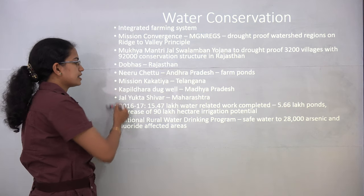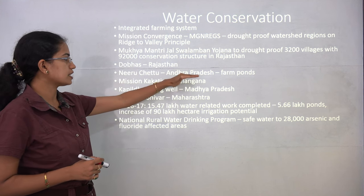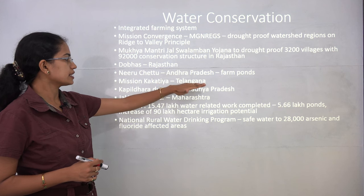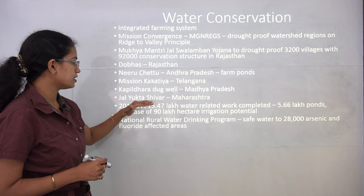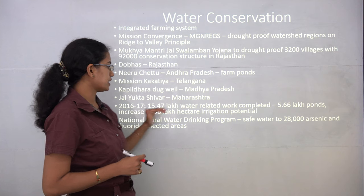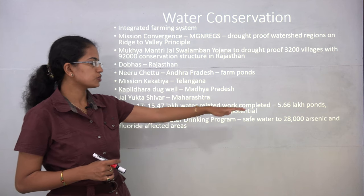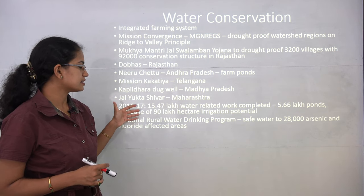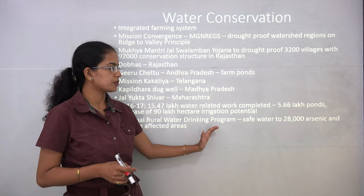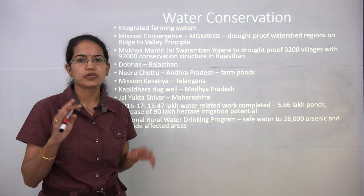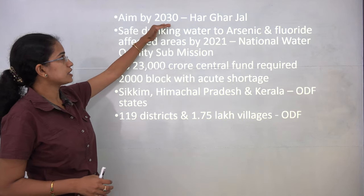State-wise, there have been various water conservation schemes: in Rajasthan it is known as Dobas, in Andhra Pradesh as Nehru Chittu, in Telangana as Mission Kakatiya, in Madhya Pradesh as Kapildhara Dug Well, in Maharashtra as Jalyukt Shivar. As of 2016–17, nearly 15.47 lakh water-related works have been completed, including nearly 5 lakh ponds, increasing irrigation potential by 90 lakh hectares. The National Rural Drinking Water Programme has also been released.